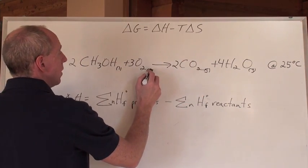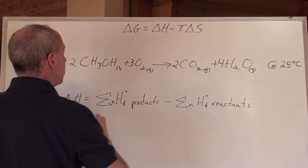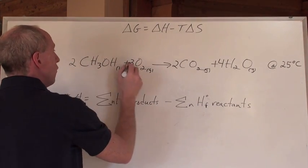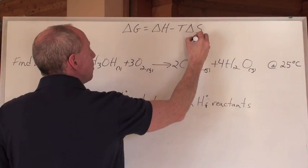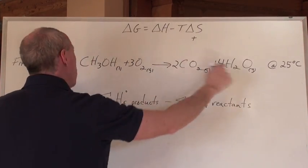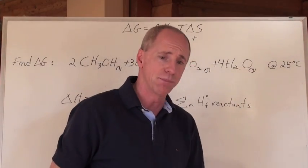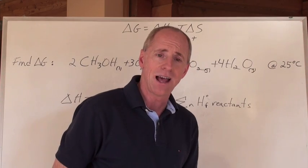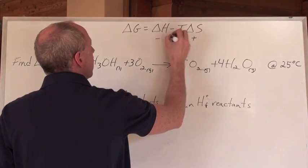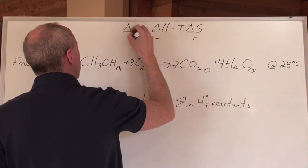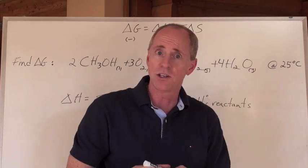We've got liquids and gases turning into gases — an increase in entropy for the system — and five molecules going in but six coming out. So the entropy of the system is increasing. And since this is combustion of methanol, methanol burns, so delta H is going to be negative. Negative delta H and positive delta S makes a spontaneous reaction.